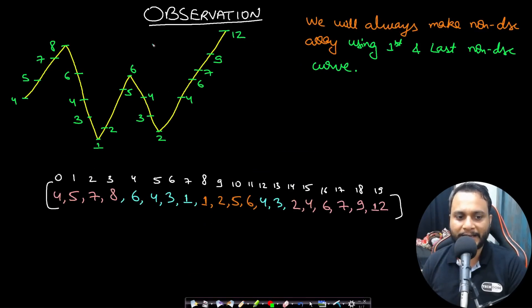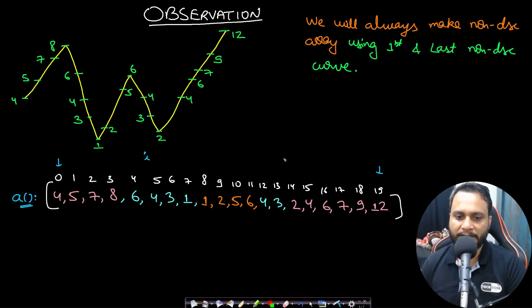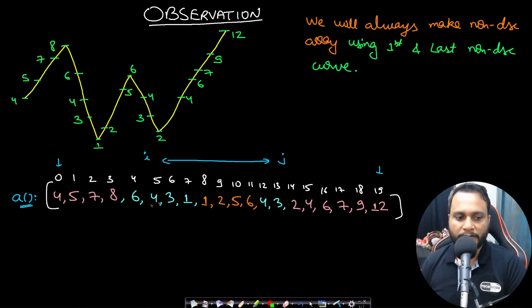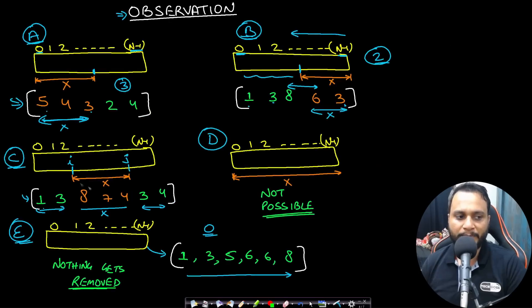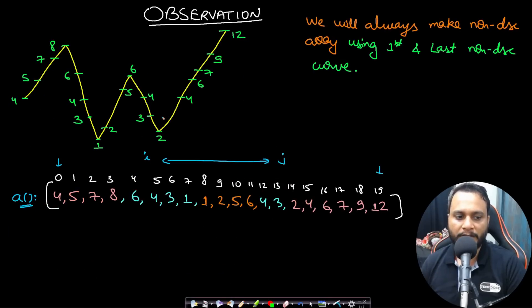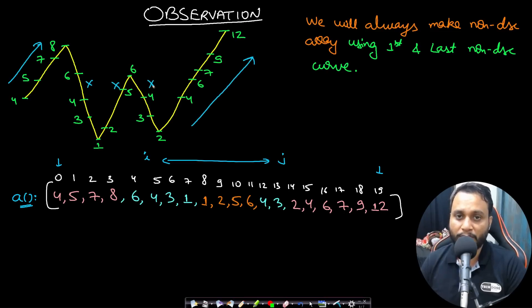From these cases, we derive a key observation. Representing the array as a curve, the subarray to remove either starts at index 0, ends at the last index, or starts at some i and ends at some j in the middle. The fourth case is removing nothing. When you have a curve with multiple increasing and decreasing sections, the only curves of interest are the first increasing curve and the last increasing curve.